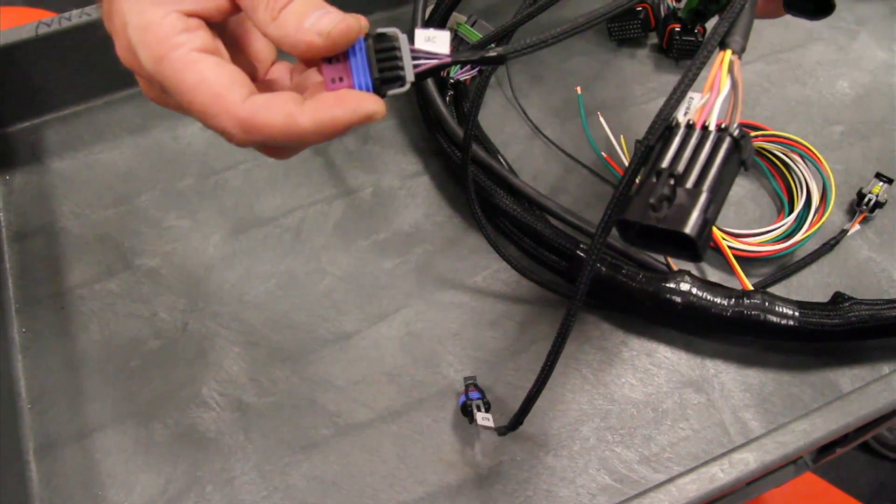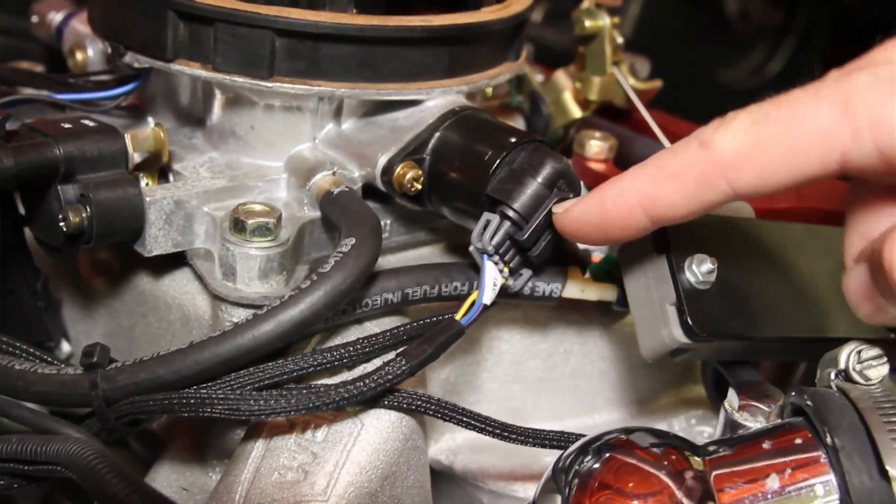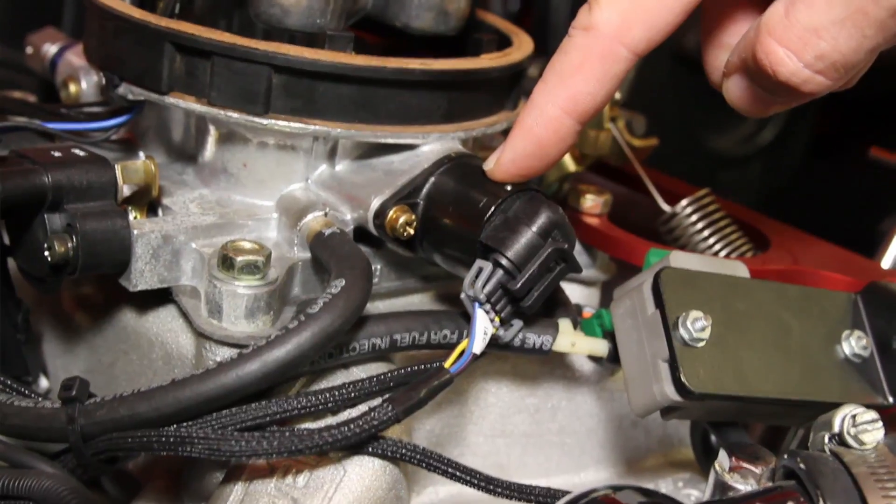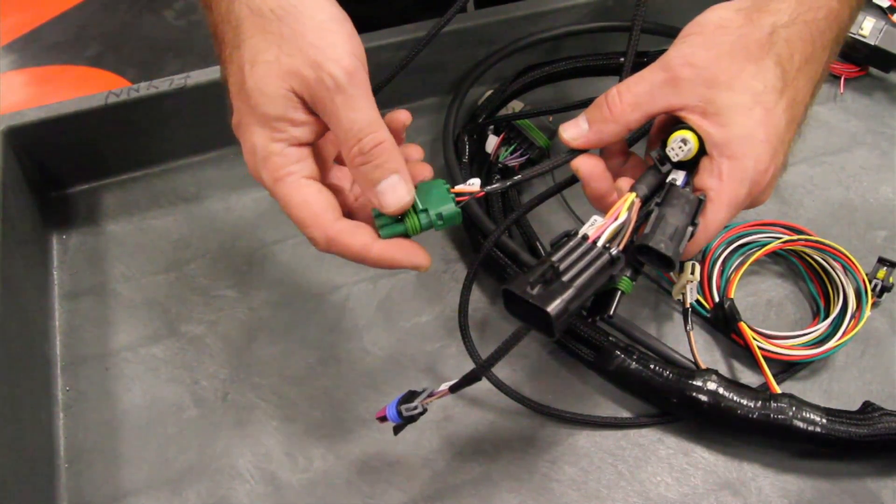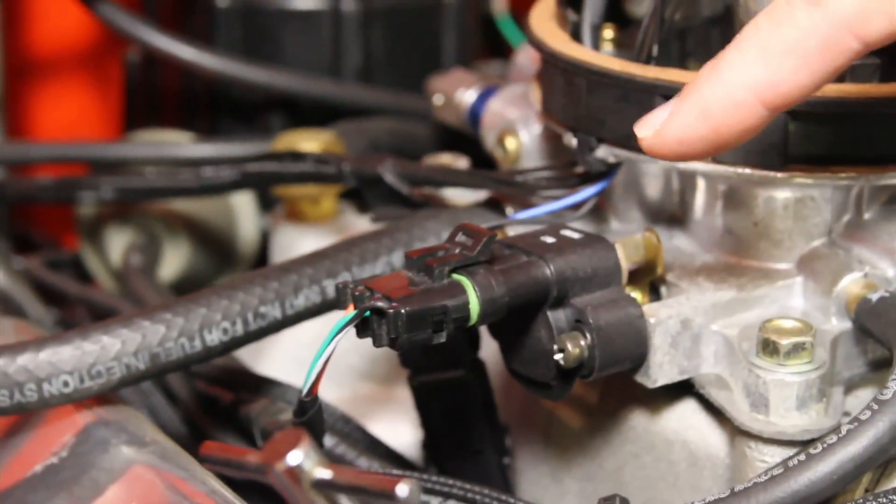This is labeled IAC for idle air control motor, which is mounted on the throttle body. That plugs into that. This is labeled TPS for the throttle position sensor. It plugs into the throttle body as well.